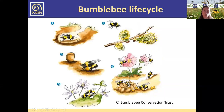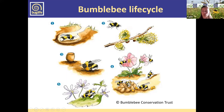It's a good idea to look at the ecology of our bumblebees, because understanding their behavior and what they do through the year can really help with identification. Using this wonderful illustration from the Bumblebee Conservation Trust, bumblebees have an annual life cycle. Their strategy to survive the winter is really just for the queen to hibernate alone, and then the colony dies off.